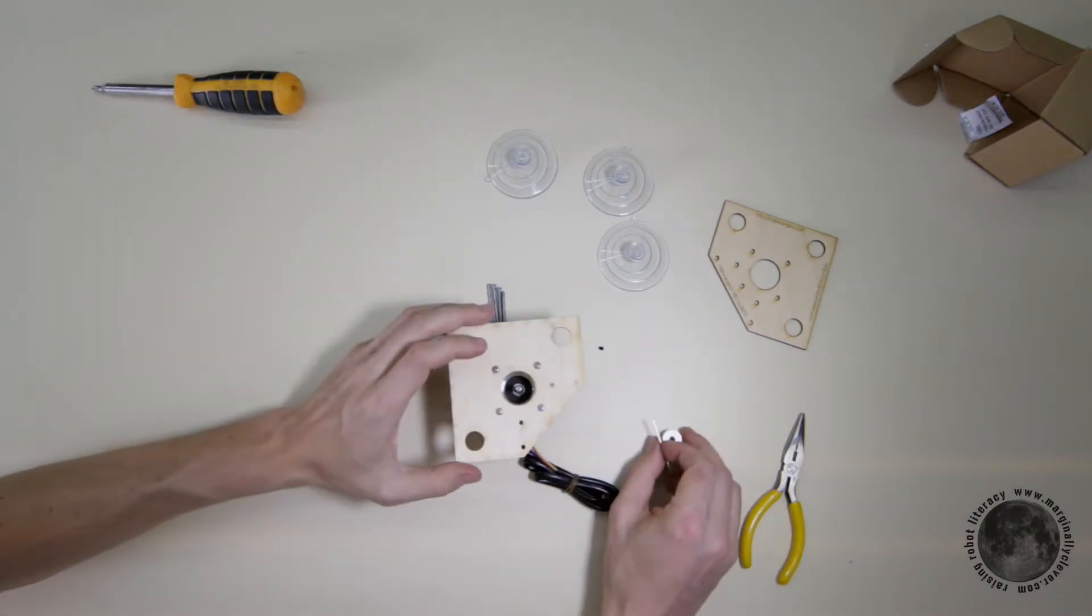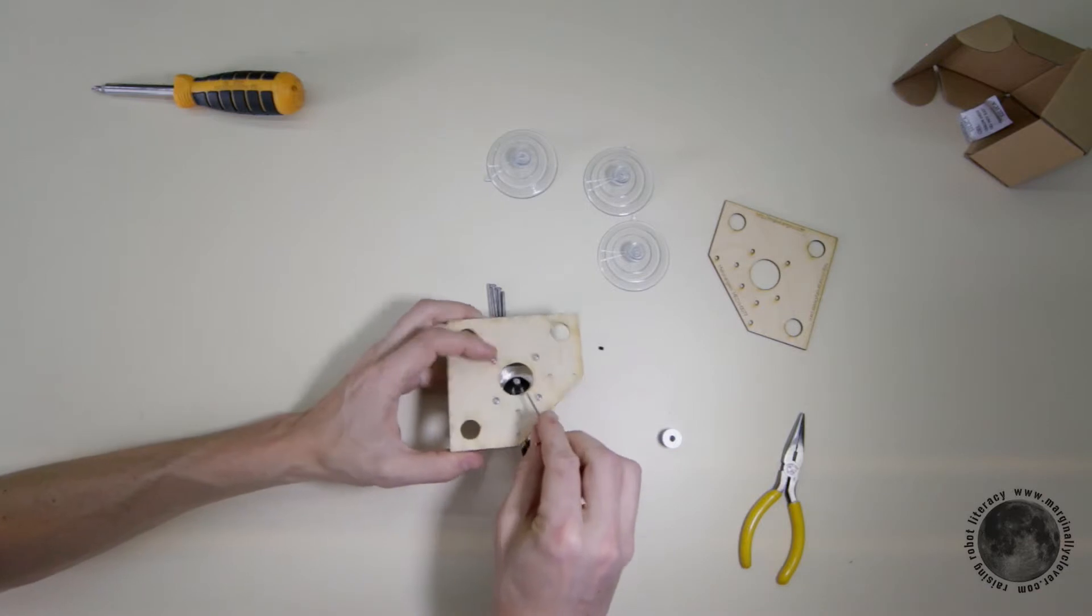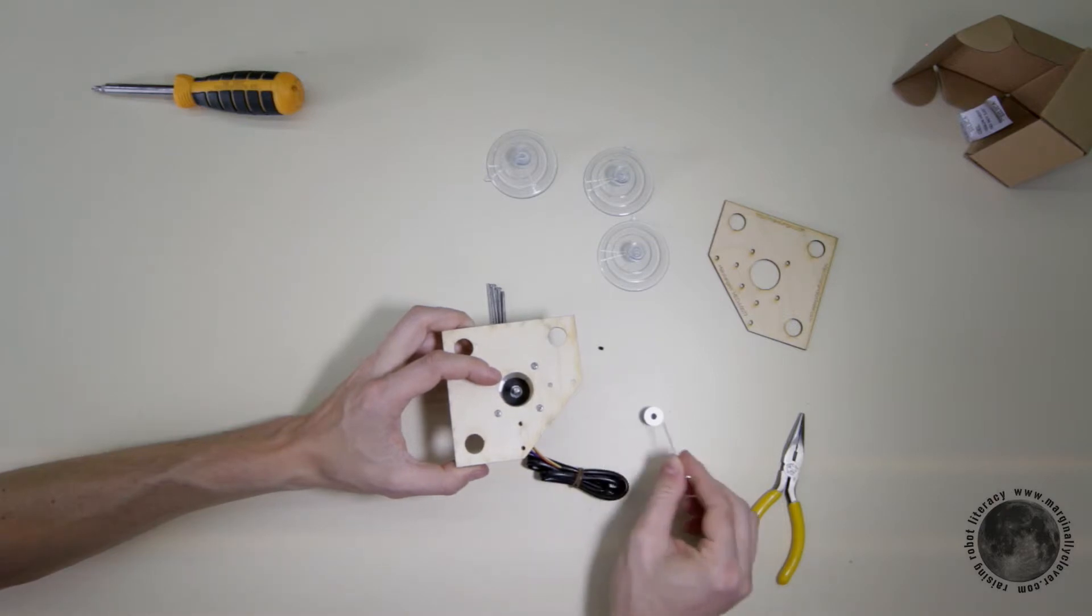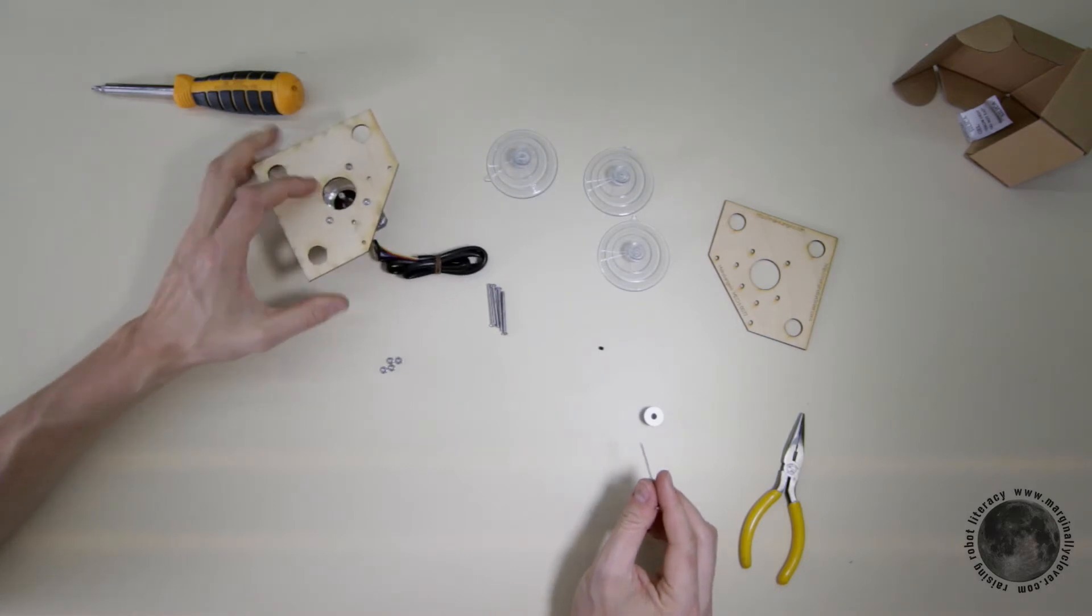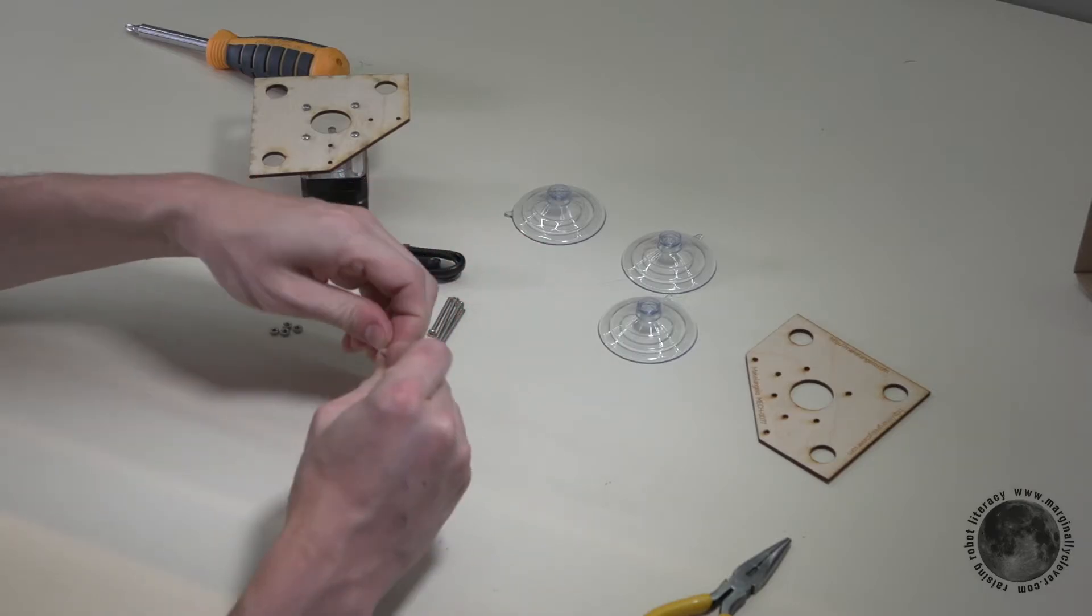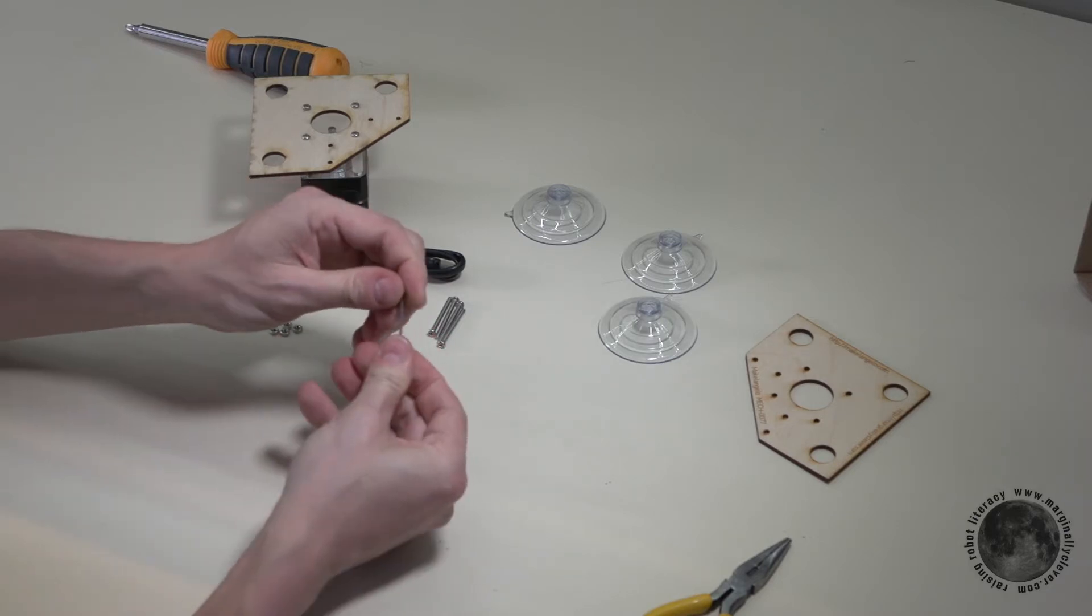You'll also see there's a flat side on the shaft. One of these set screws is going to come through and touch on that flat side so that it stays really tight. I may have done that out of sequence. I should have done the second set screw first, but whatever.